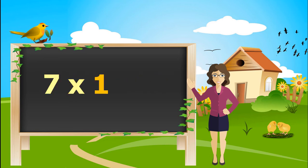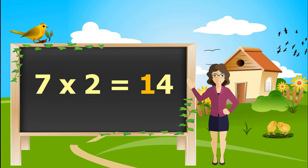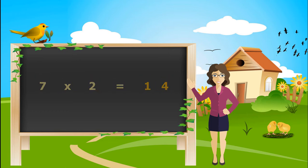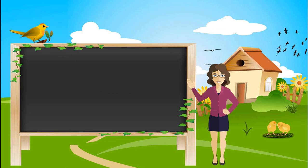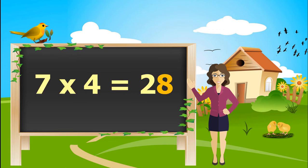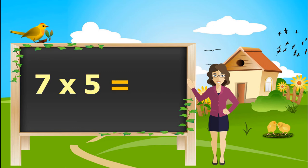7 ones is 7. 7 twos are 14. 7 threes are 21. 7 fours are 28. 7 fives are 35.